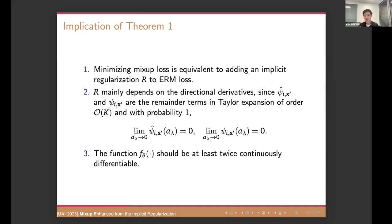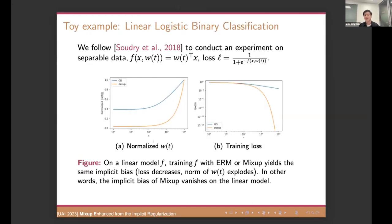And for point two, R mainly depends on a series of directional derivatives. So if K is large enough, which means the remainder terms in the Taylor expansion will vanish, right? So with probability one, if your lambda goes to zero, at this limit, your remainder term goes to zero. So which means if we can compute infinite terms of this directional derivatives, we can precisely compute the implicit regularization, but it's not practical, right? So the last point is the function F should be at least a twice differentiable continuous differentiable. The last point is very easy to verify in the toy example.